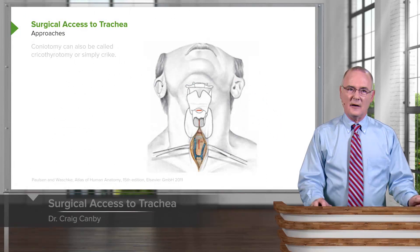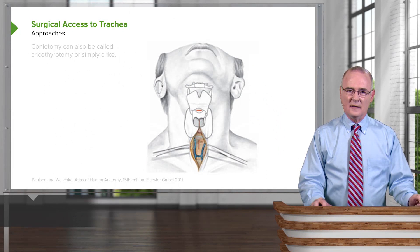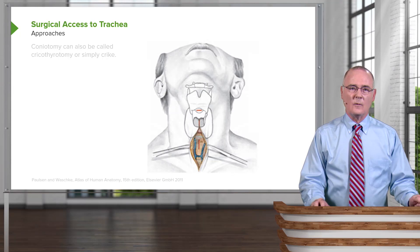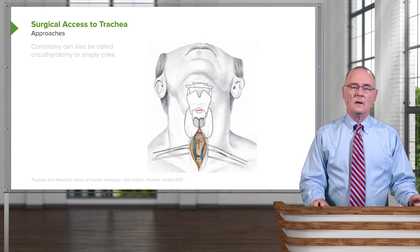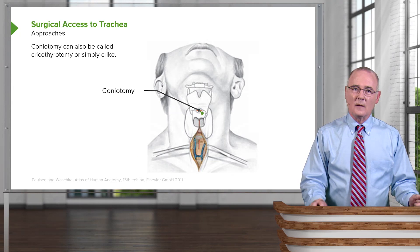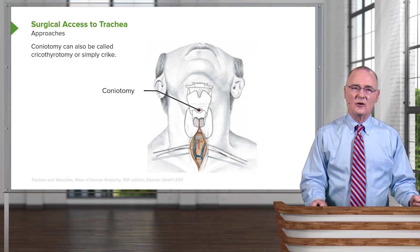Our next area to take a look at is surgical access to the trachea. This may be necessitated when one cannot intubate and you need to provide ventilation to an unconscious or even a conscious patient. Several approaches: one is a coniotomy, which goes by two alternate names — a cricothyrotomy, also referred to simply as a cric.